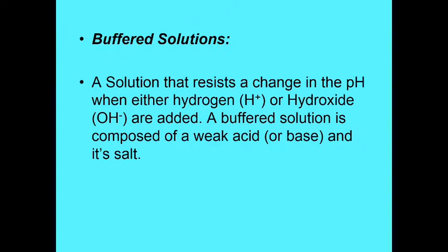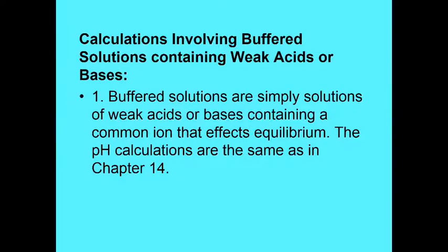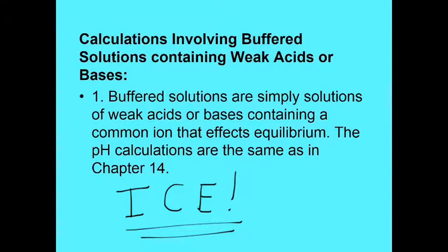All right, so buffered solutions, we have said, are a solution that resists a change in the pH when either hydrogen or hydroxide are added. A buffered solution is composed of a weak acid or a base, and its salt. Consequently, you get the common ion effect. So calculations involving buffered solutions contain weak acids or bases. So the first thing to remember is that buffered solutions are simply solutions of weak acids or bases containing a common ion that affects equilibrium. The pH calculations are the same as in chapter 14. What do I mean by that? I mean ice-ice baby. So if you remember how to do ice problems, we're good. And then I'll also teach you a shortcut way called Henderson-Hasselbalch. And you're welcome to use whichever one you want. Please make sure you show your work.